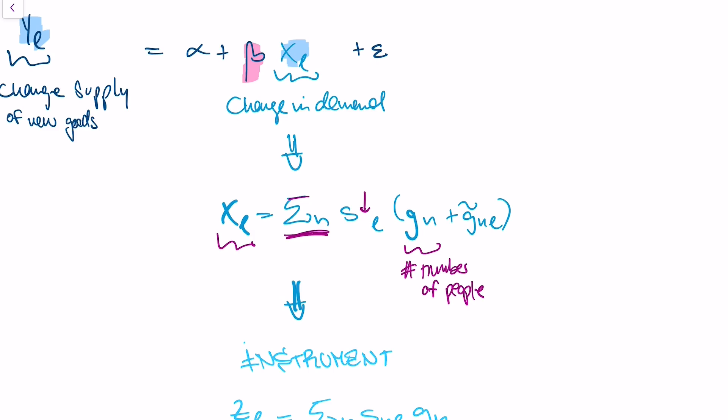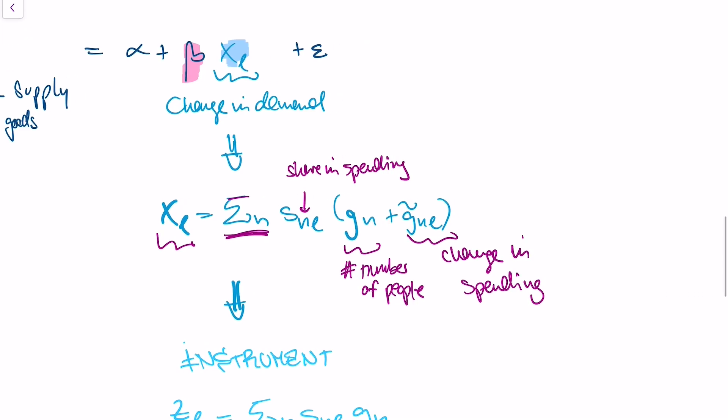And GNL is the change in spending habits of a certain consumer segment over time. So it could be that maybe 70-year-old people start playing more video games, so they buy more video games - change in spending patterns over time.